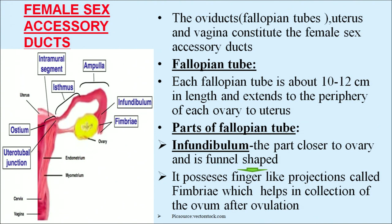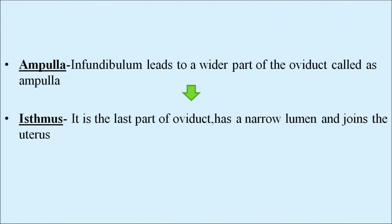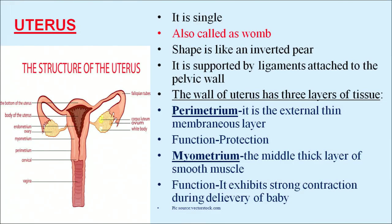The infundibulum is the part closer to the ovary, is funnel-shaped, and possesses finger-like projections called fimbriae, which help in collection of the ovum after ovulation. The ampulla is a wider part of the oviduct, which is the second part of the fallopian tube. The isthmus is the last part of the oviduct, has a narrow lumen, and joins the uterus. Importantly, the ampullary-isthmic junction is the site of fertilization in females.